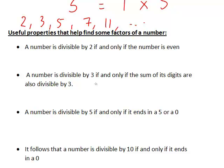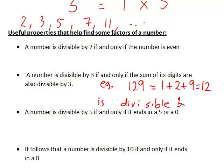For example, consider the number 129. Adding its digits: 1 plus 2 plus 9 equals 12. Since 12 is divisible by 3, we know that 129 is also divisible by 3.